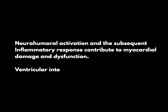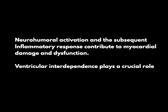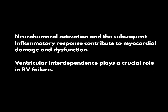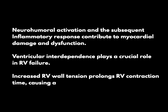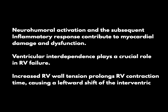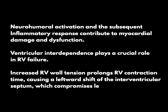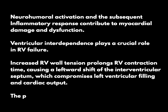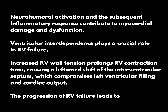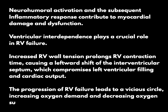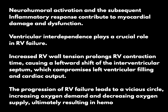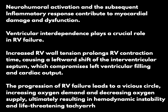Ventricular interdependence plays a crucial role in RV failure. Increased RV wall tension prolongs RV contraction time, causing a leftward shift of the interventricular septum, which compromises left ventricular filling and cardiac output. The progression of RV failure leads to a vicious circle, increasing oxygen demand and decreasing oxygen supply, ultimately resulting in hemodynamic instability and life-threatening tachyarrhythmias.